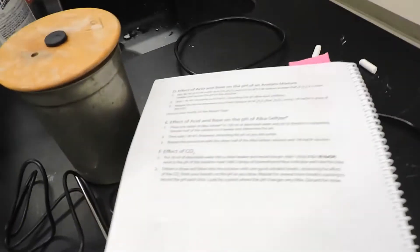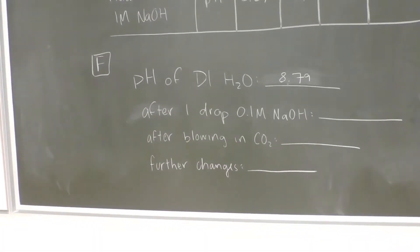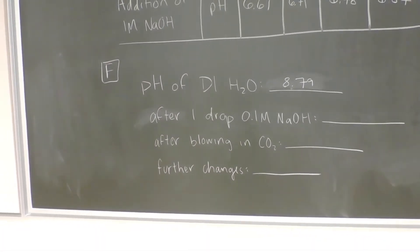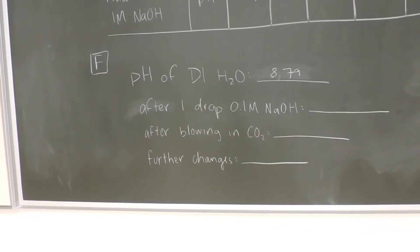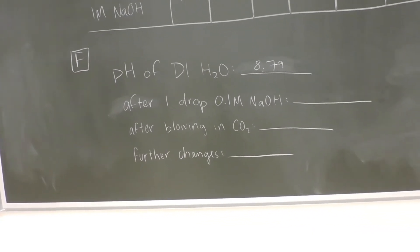Moving on to Part F, we're going to see the effect of CO2. For Part F, we're going to start off with 50 milliliters of DI water in a beaker, and the pH of this is 8.79.